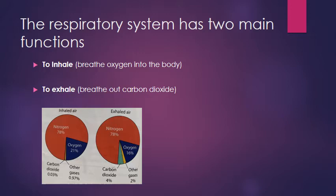Looking at this diagram of the percentages of inhaled and exhaled air: most of what we breathe in is actually nitrogen. Because nitrogen has no use for our working muscles or our body, the amount breathed in and breathed out is the same. The main difference is that when we breathe in we have 21% oxygen, and when we breathe out we only have 16% oxygen because some has been used. There is then a greater number of carbon dioxide molecules being breathed out.